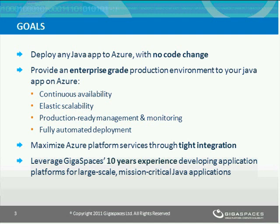The second goal was to provide the user with a true enterprise-grade production environment. This includes things like continuous availability and failover, elastic scaling across the entire stack, fine-grained and application-driven monitoring, and fully automating the deployment lifecycle. Azure is a really powerful platform, and the third goal was to maximize Azure capabilities for the Java enablement projects.